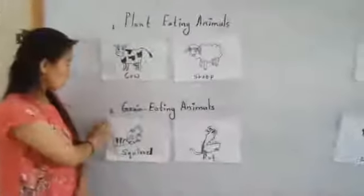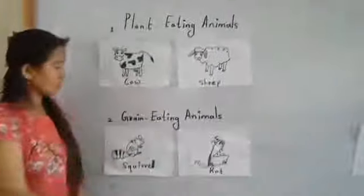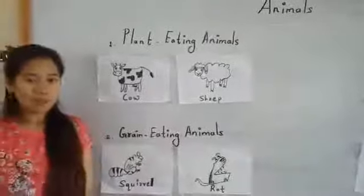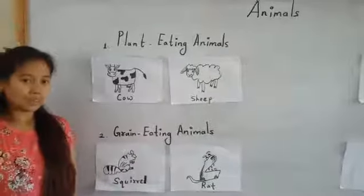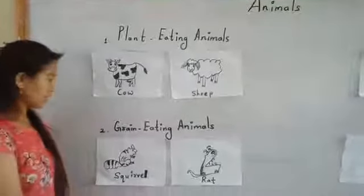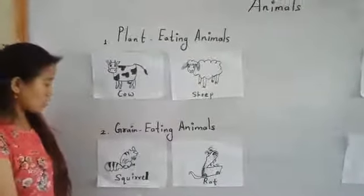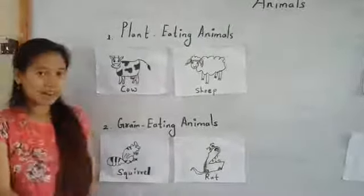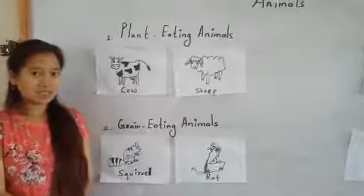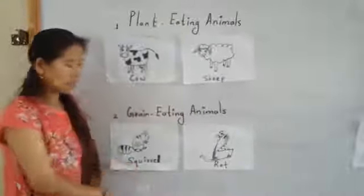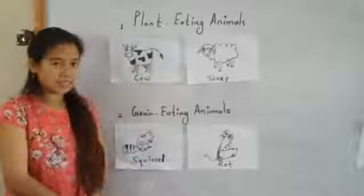Second, grain eating animals. Some animals eat only grain, so they are called grain eating animals. Just like squirrels, rats, etc.